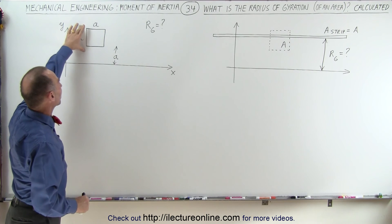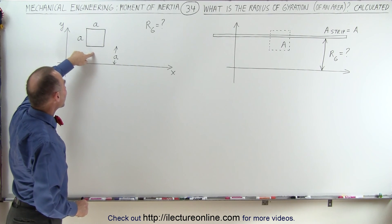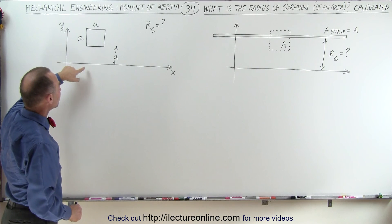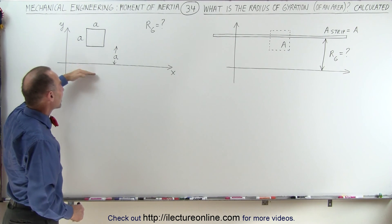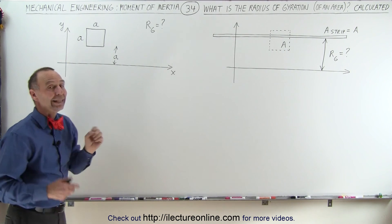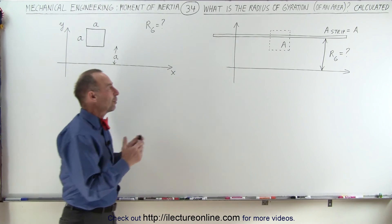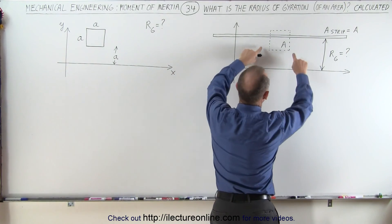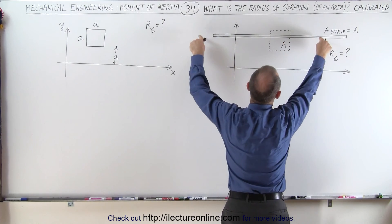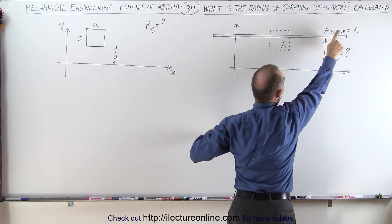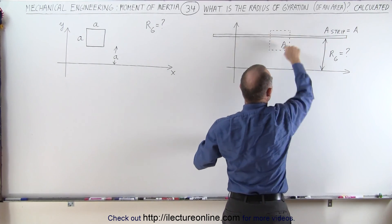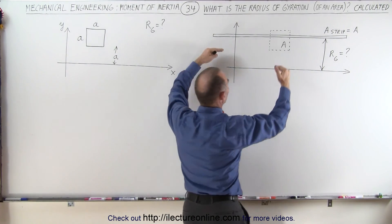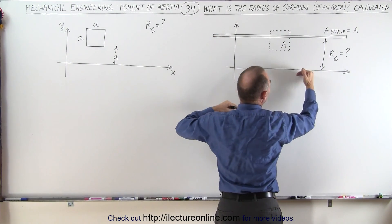Here we have a square which is at a distance A away from the x-axis. We're going to calculate the moment of inertia relative to the x-axis for the square, and then find the radius of gyration. We're going to replace the square by a thin little strip such that the area of the strip equals the area of the square, and place it at a particular distance away from the x-axis.